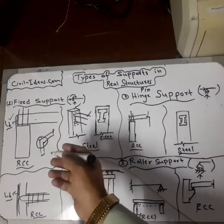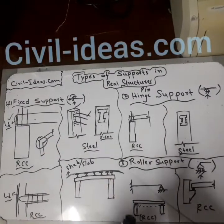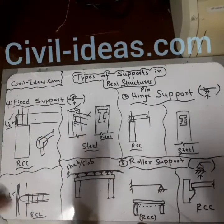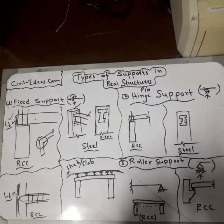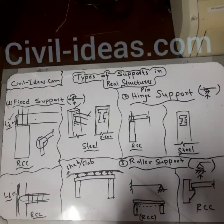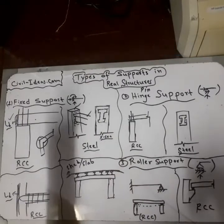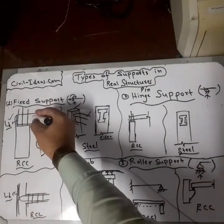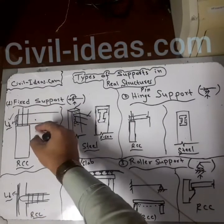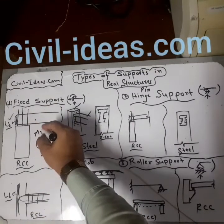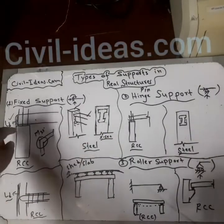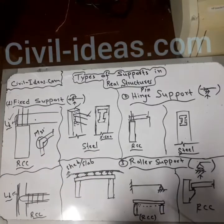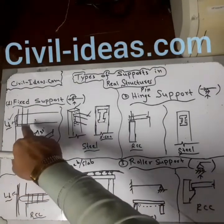You have to check the reinforcement drawings on-site to verify that the proper development length is provided. The concrete should also be high-strength, like M30 or M35 and above. Both the concrete grade and reinforcement must be verified to confirm whether the support is fixed or hinge.